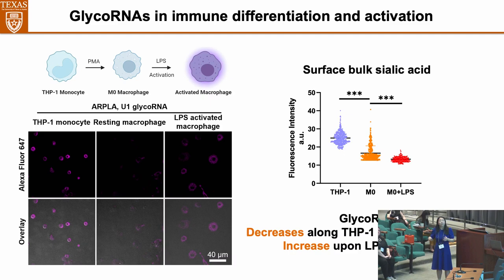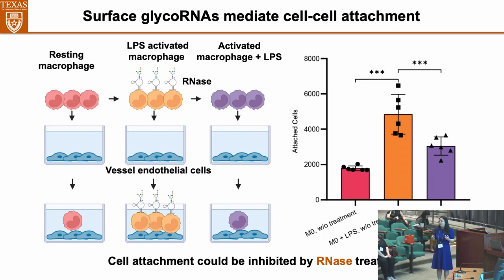Inspired by this result, we asked what the function of glycoRNA might be. Because immune cells must attach to endothelial cells and pass through blood vessels to activate the immune response, we tested whether glycoRNA could mediate cell-cell attachment. We incubated LPS-activated macrophages with endothelial cells and calculated cell-attachment efficiency. We found that activated macrophages, which have more abundant glycoRNA, had higher cell-attachment efficiency than resting macrophages. And when we used RNase to remove glycoRNA from activated macrophages, the cell-attachment ratio decreased, indicating that glycoRNA may have a function in cell-cell attachment.